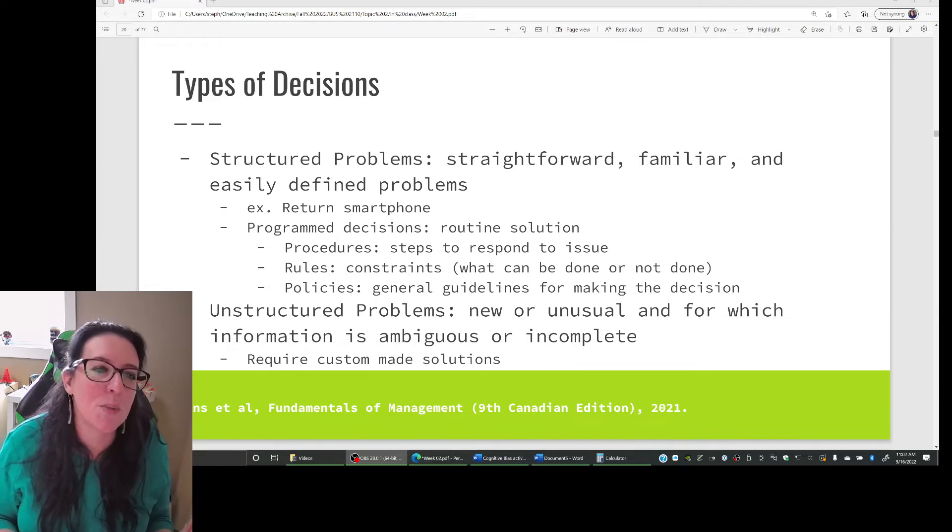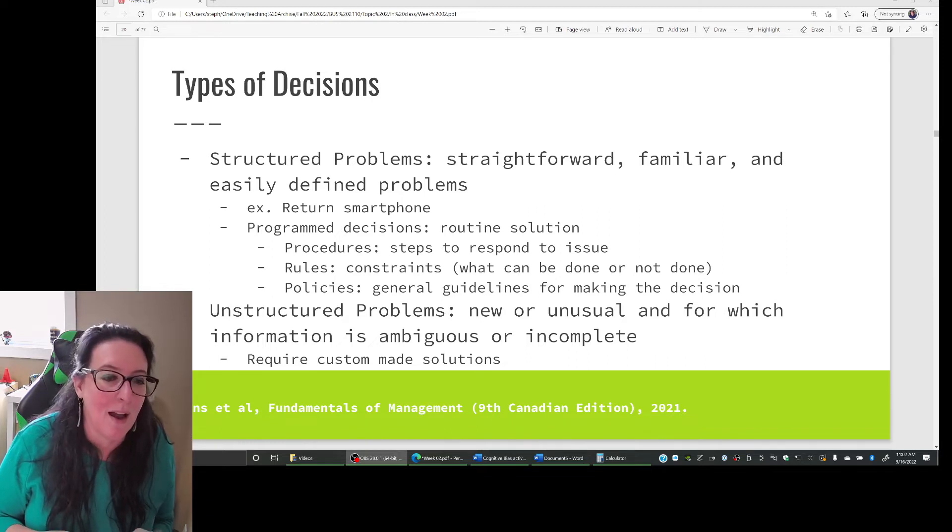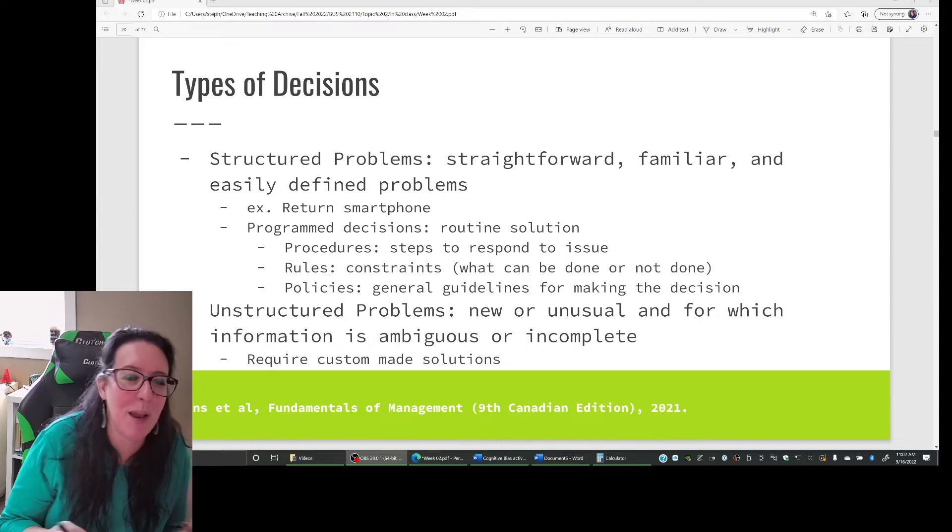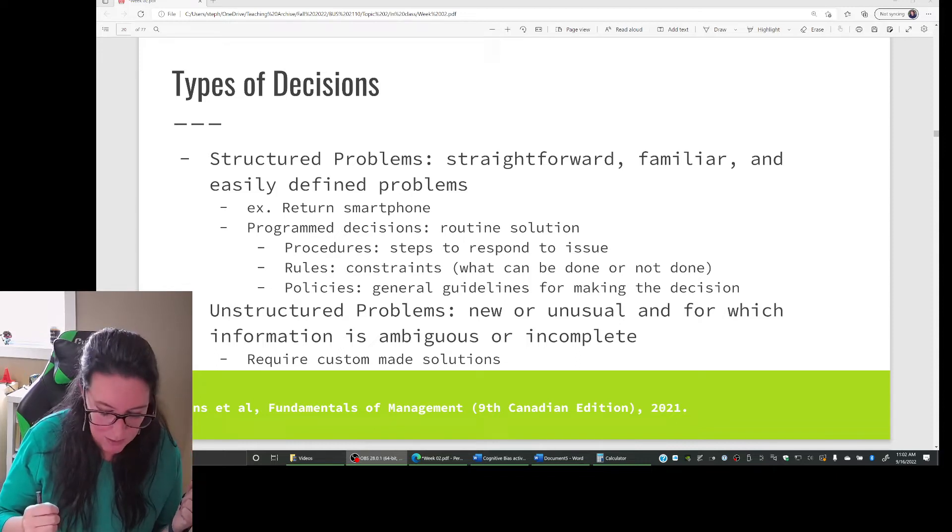What are the rules in terms of what we can do to help the customer or what can't? And we probably have some policies, some general guidelines for making the decision. Maybe the focus of our organization is that the customer is always satisfied or happy when they leave. And so because of that, ultimately what matters is that the customer gets something.